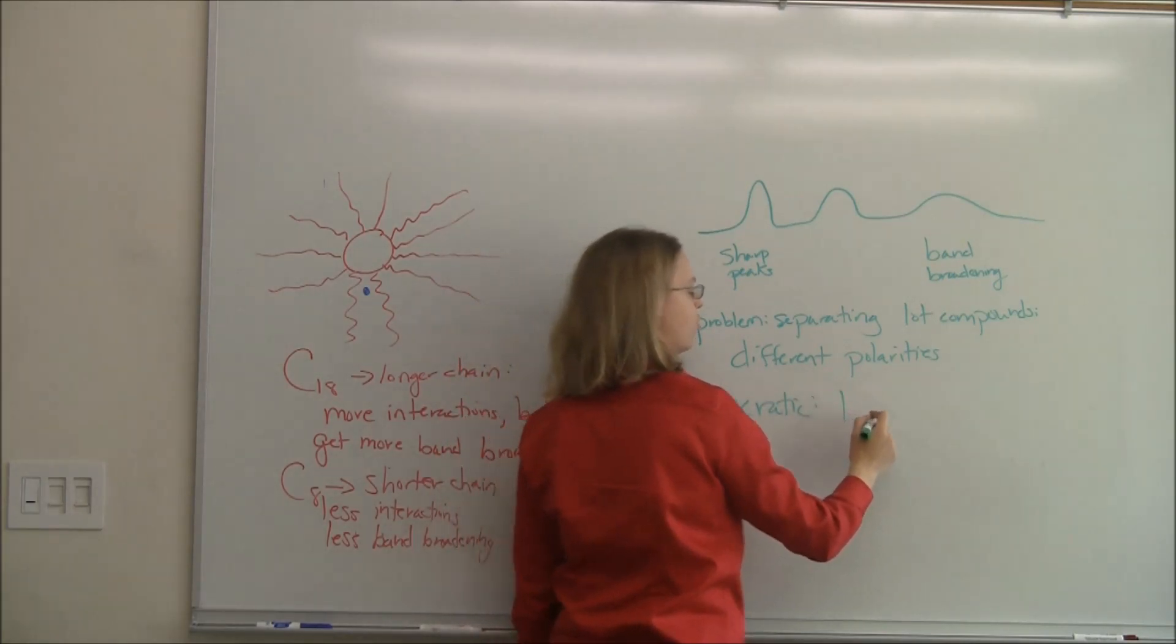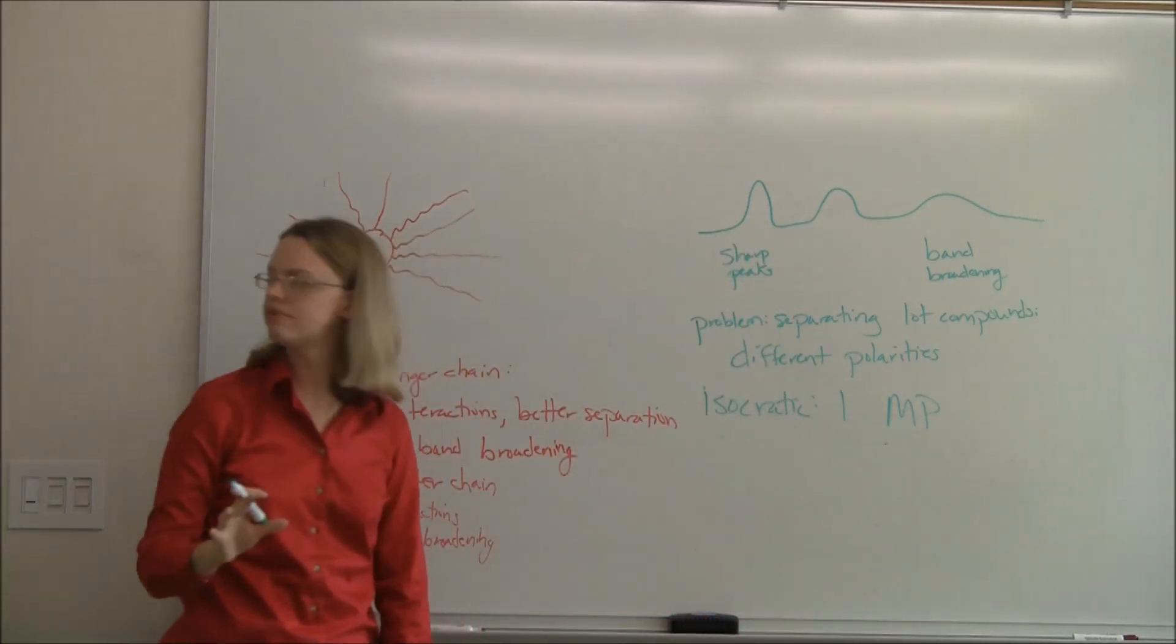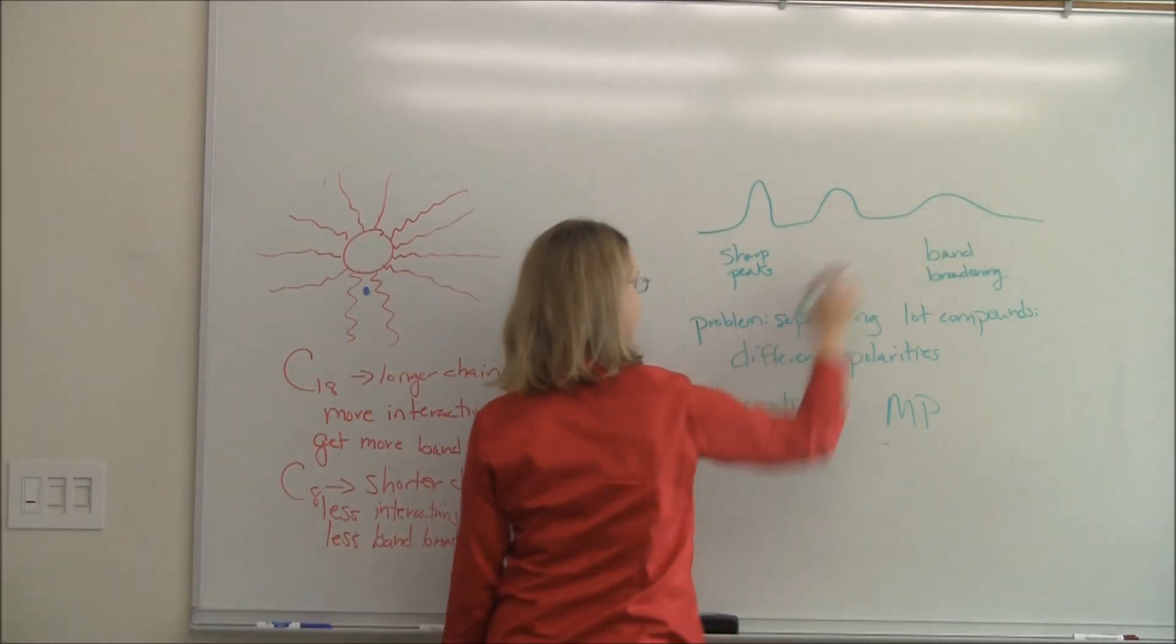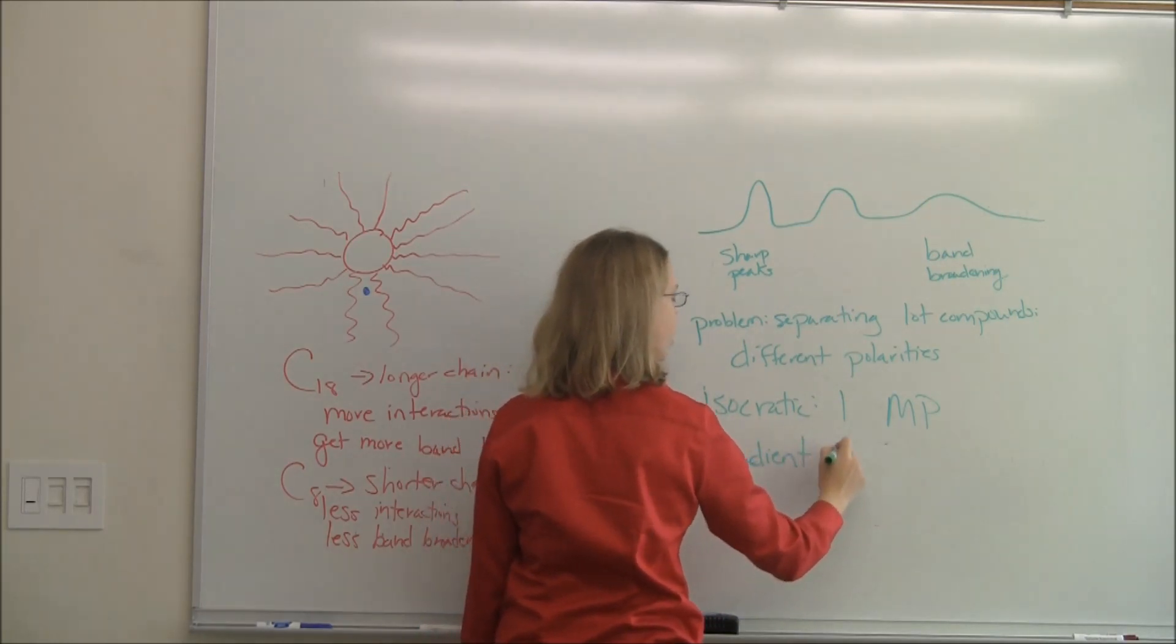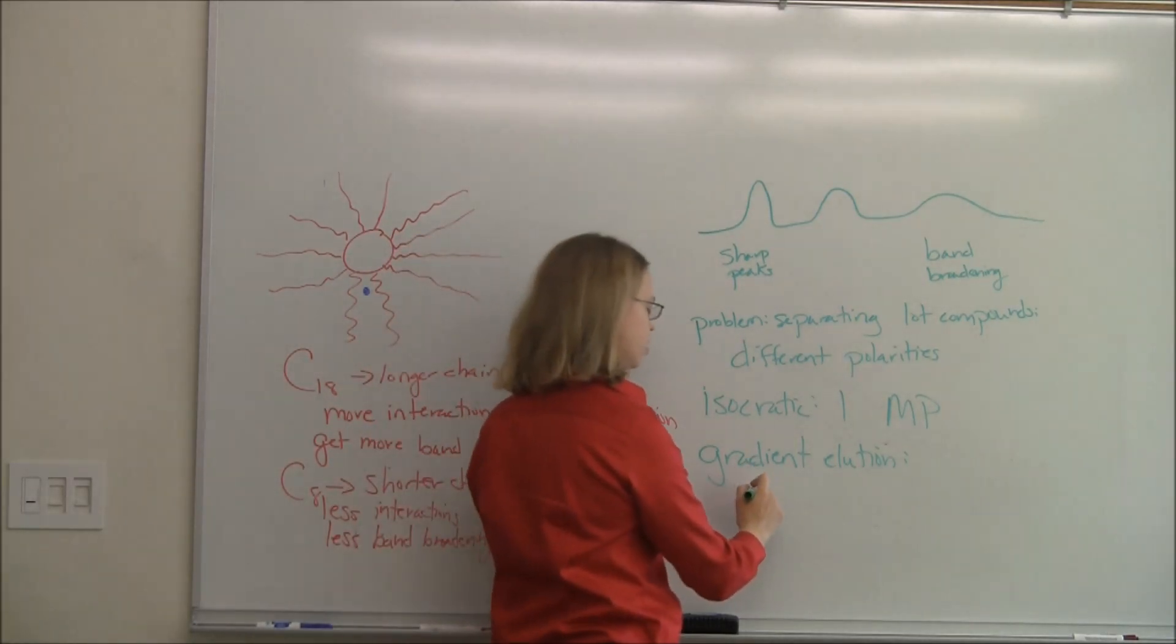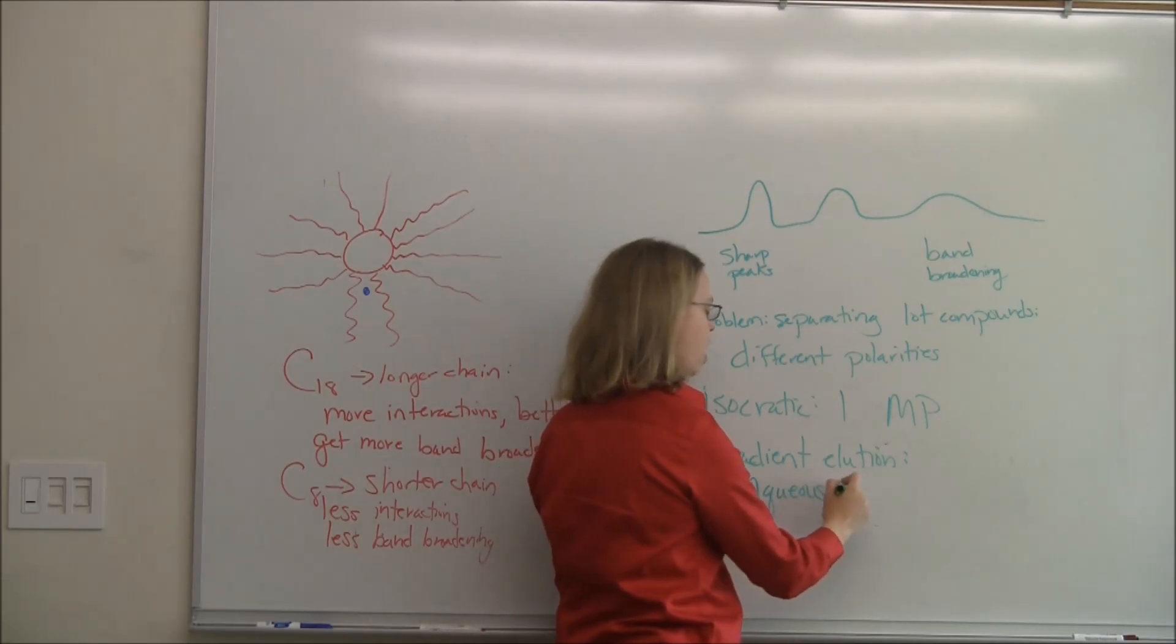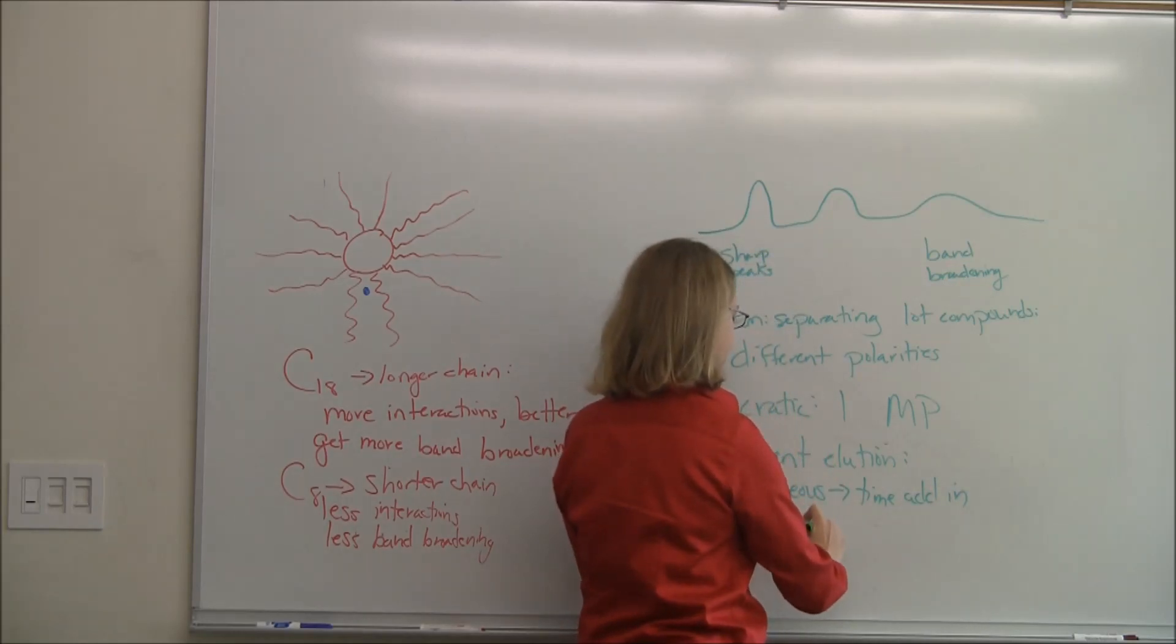The solution to this - this chromatogram is what I'll call isocratic. Isocratic just means you have one mobile phase. You pick a composition of a mobile phase, you leave it at that, you go. But the solution to getting these clumps to come out faster is gradient elution. For gradient elution, what you usually do is start with a mobile phase that's more aqueous. We're doing reverse phase. And over time, you add in more organic.